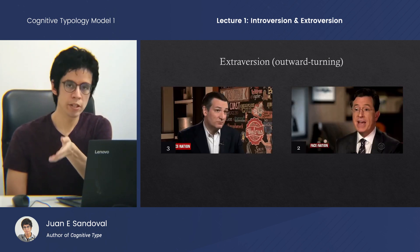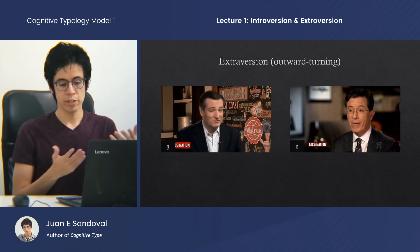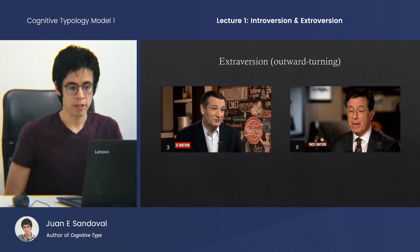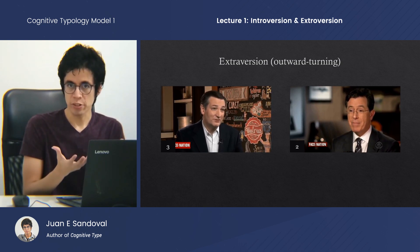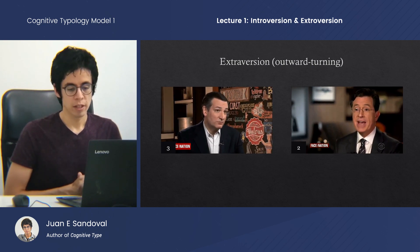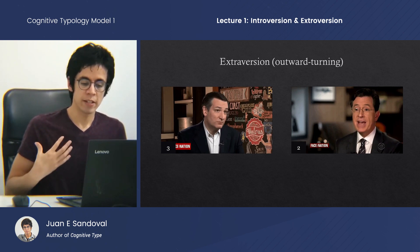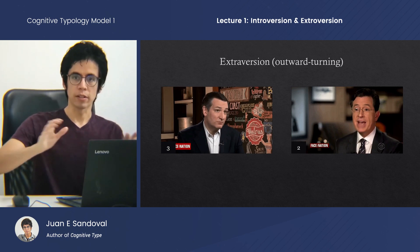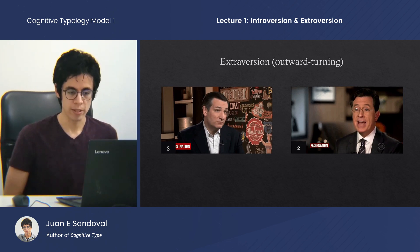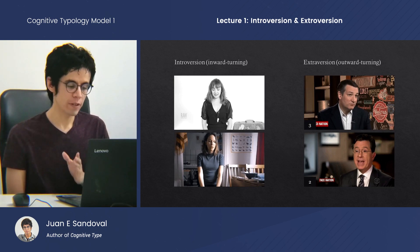And here we see the opposite: an engagement with the object — the interviewer, who is off screen. They're maintaining eye connection, gesticulation, voice — multiple ways of connecting. They're attentive and animated, and their bodies are in a state of constant motion rather than ceasing motion and reserving energy as we saw with the other two. I've just supplied you with a physical definition of introversion and extroversion.